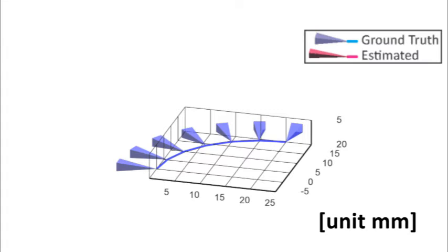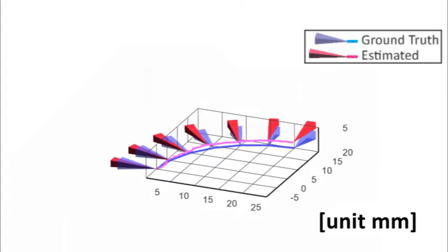The blue trajectory shows the ground truth motion from the robot arm, and red shows the measured trajectory. Speedo can measure high-accuracy trajectory.